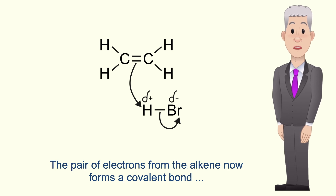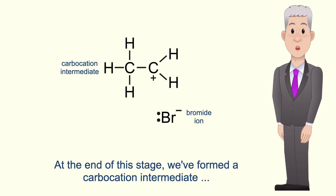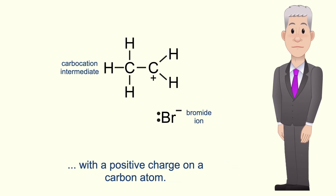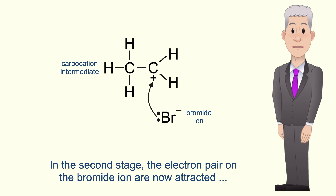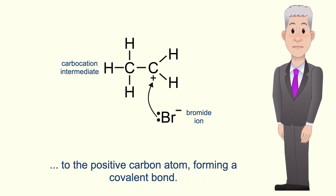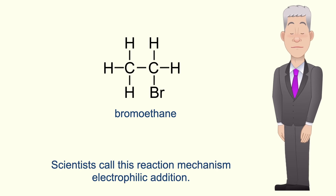The pair of electrons from the alkene now forms a covalent bond to the hydrogen atom. At the end of this stage we've formed a carbocation intermediate with a positive charge on a carbon atom. We've also formed a bromide ion. In the second stage the electron pair on the bromide ion are attracted to the positive carbon atom, forming a covalent bond, and we've now made our product, which in this case is bromoethane. Scientists call this reaction mechanism electrophilic addition.